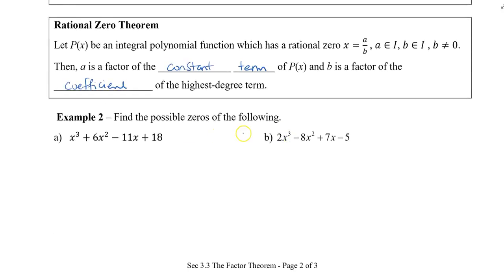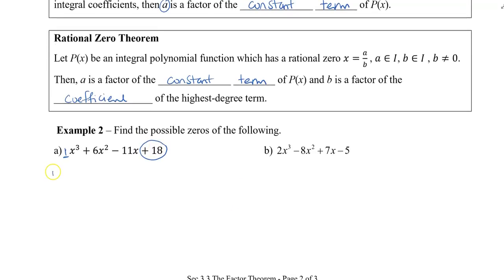Find the possible zeros. We're going to take a look at the constant term, which is 18, and the coefficient of the highest degree term — there's no number written, so it's just 1. So we really only need to look at 18. All the possible factors of 18 are: plus or minus 1, plus or minus 2, plus or minus 3, plus or minus 6, plus or minus 9, and plus or minus 18. These are all possible values for a, which we can try to see if they give a remainder of 0.